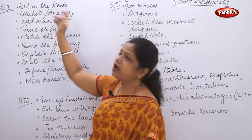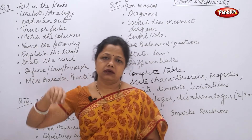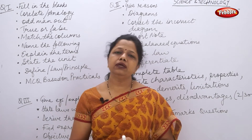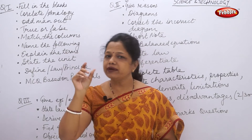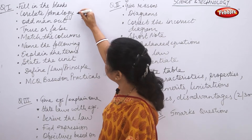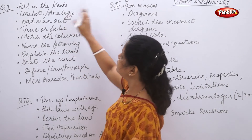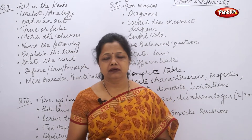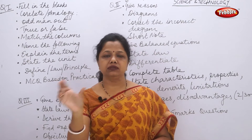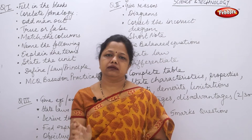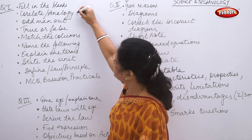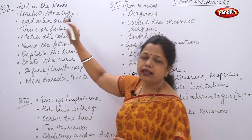For correlate or analogy questions, you will be given questions where you have to correlate. Do not write only the answer — write whatever word is given, put a semicolon in front of it, and then write the answer on the right side. Many children do not write the original word given — that is wrong. Write the original word, put the semicolon, and then write the answer.